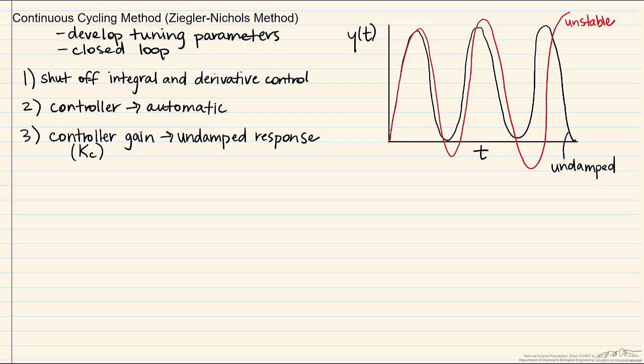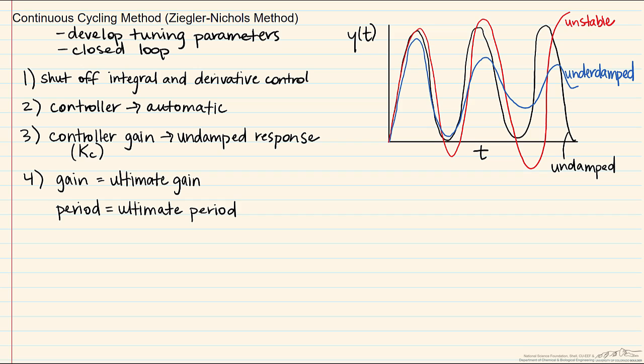On the other hand, if what you are seeing are decaying oscillations, you have an underdamped system. But in terms of finding the KC value you want, this would mean the KC is too low. Once we have found this value, the gain that corresponds to the undamped response is the ultimate gain, and the period of this response is the ultimate period.